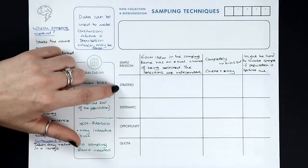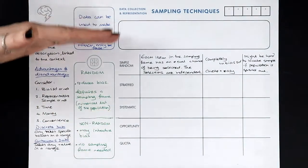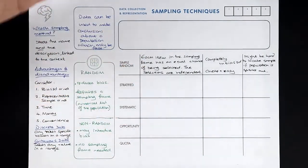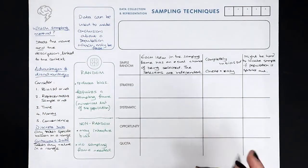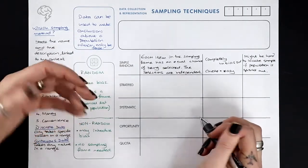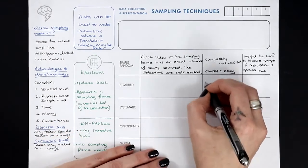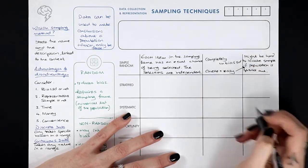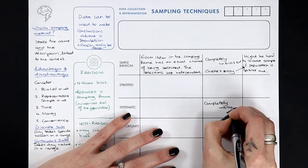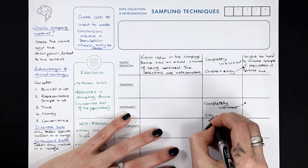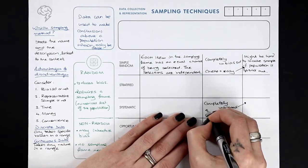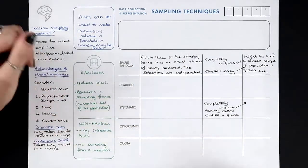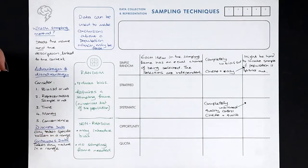Systematic sampling is another relatively simple method. You take your sampling frame and pick every nth sampling unit — every third, every fifteenth, every thirtieth. It's really simple, quick, easy, and cheap. It's particularly good for quality control — on a factory line you might take every sixth item and do a quick quality check.